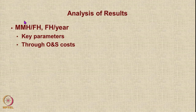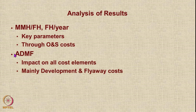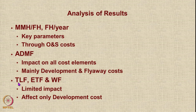In conclusion, MMH/FH and flight hours per year are the key parameters because they greatly affect the largest component — operations and support cost. The aircraft design and manufacture factor impacts all cost elements, mainly development and flyaway cost. The effect of technology level, engine technology factor, and weapons factor was limited — affecting mainly development cost and not much the other cost elements.